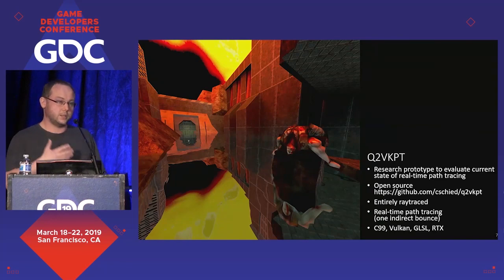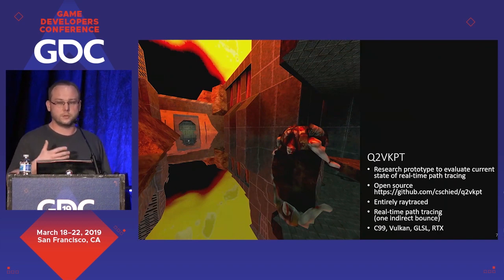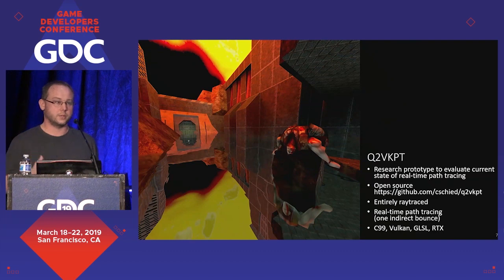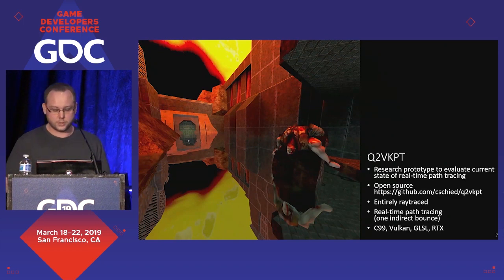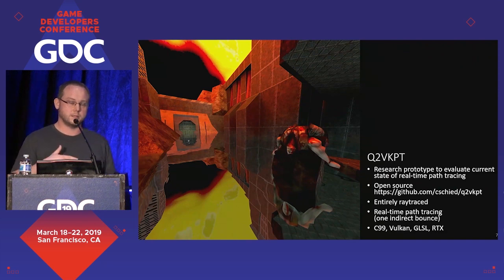I started Q2-VKPT as a research project — I've done research on denoising and reconstruction filters — and I wanted to figure out what is actually the current state of the art if we want to do path tracing in real time, and whether these denoising filters can really deal with fully dynamic content going further than just a standard research prototype. It is completely open source under the GPL, roughly 12,000 lines of code, written in about two months. It's a completely ray-traced engine — the renderer was completely replaced — and it's based on the Vulkan extensions by NVIDIA for using RTX.